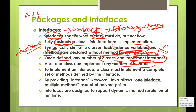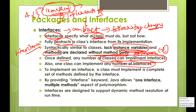For example, if interface A has 10 methods and B implements A, then since methods will not have a body, B should provide implementation for all 10 methods. If B doesn't provide implementation for all the methods, it should be declared as abstract.